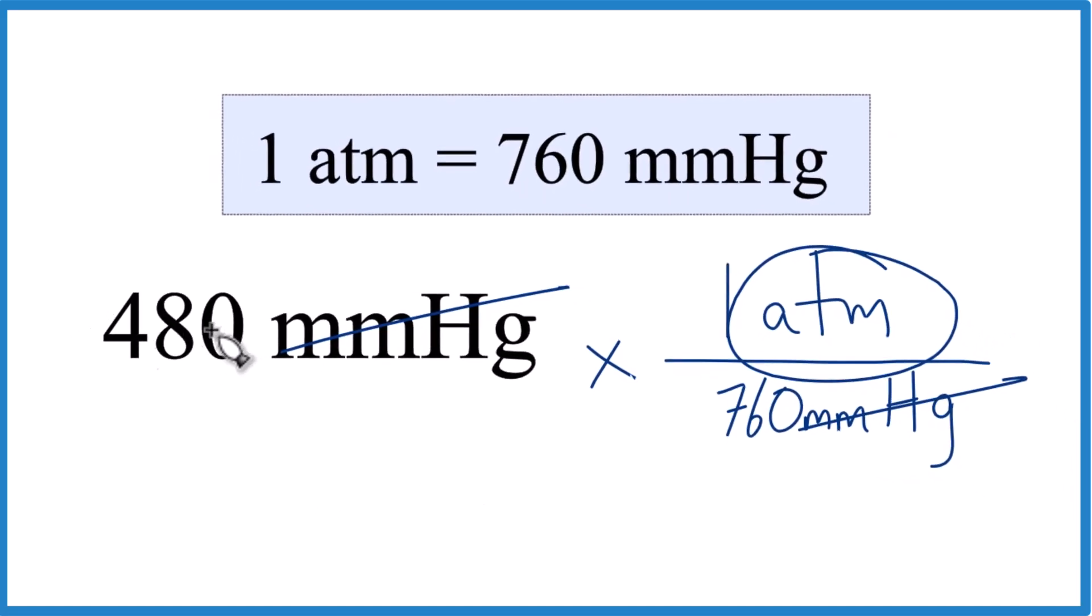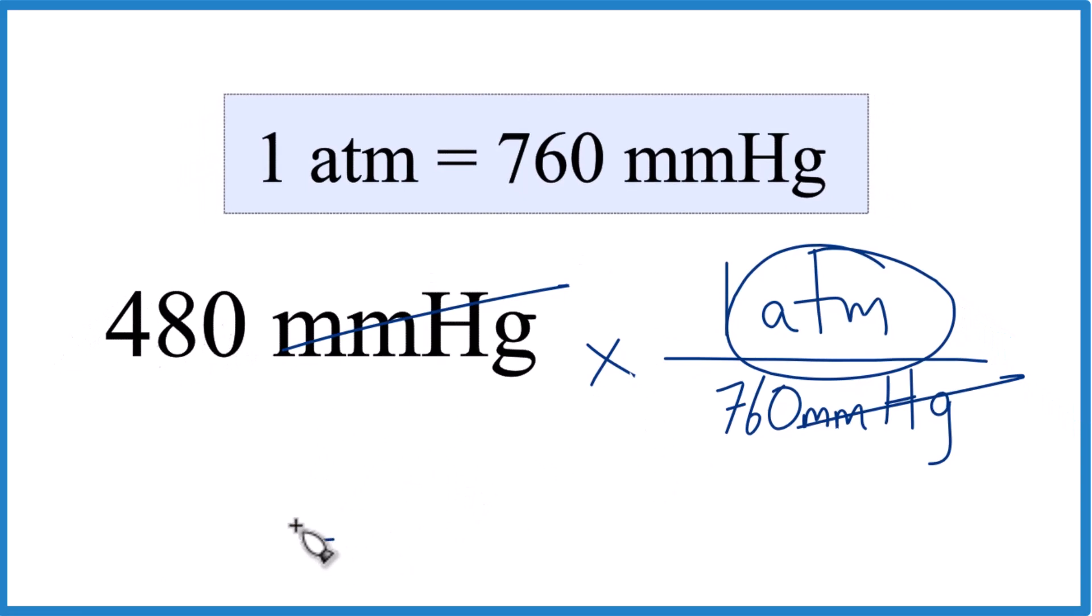So 480 divided by 760, that equals 0.6315. Let's round it to 0.632. And the units, atmospheres, because everything else canceled out. So that's how we know we did this correctly.